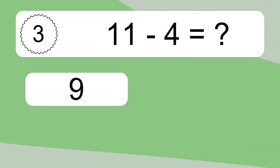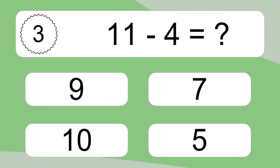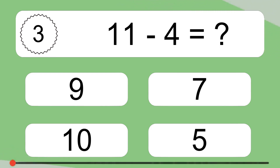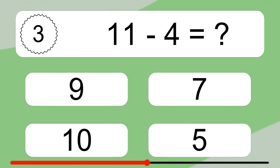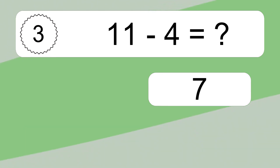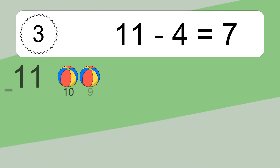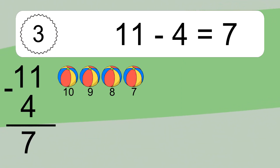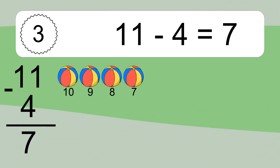11 minus 4 equals what? 11 minus 4 equals 7. Let's count it: 10, 9, 8, 7.